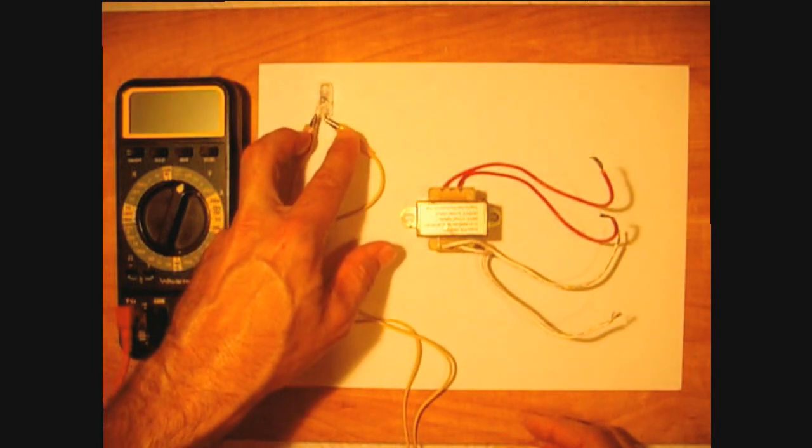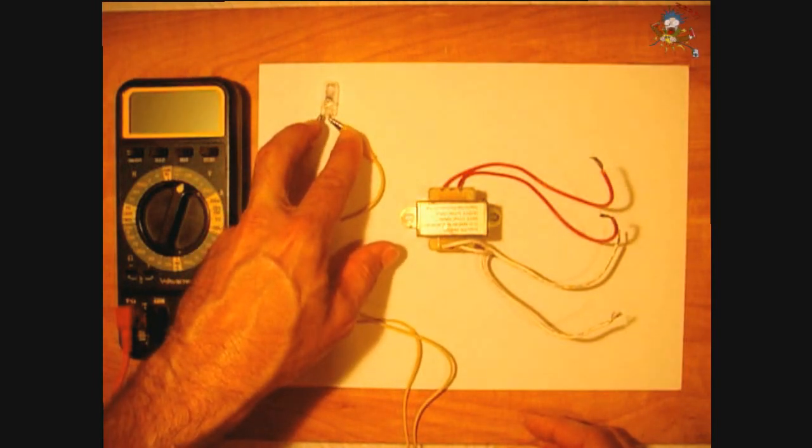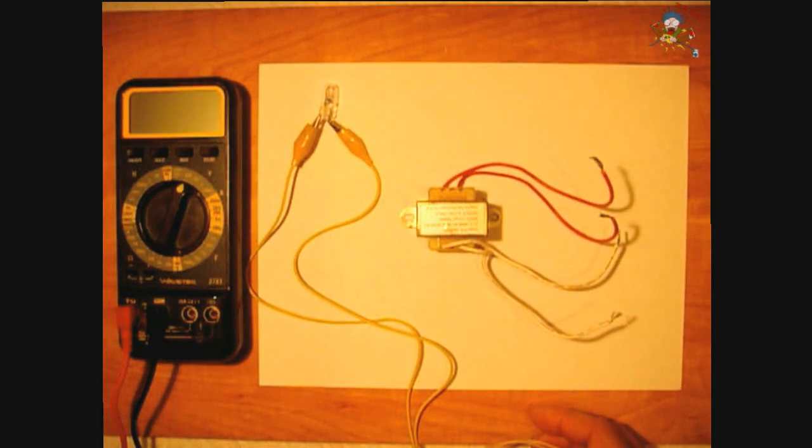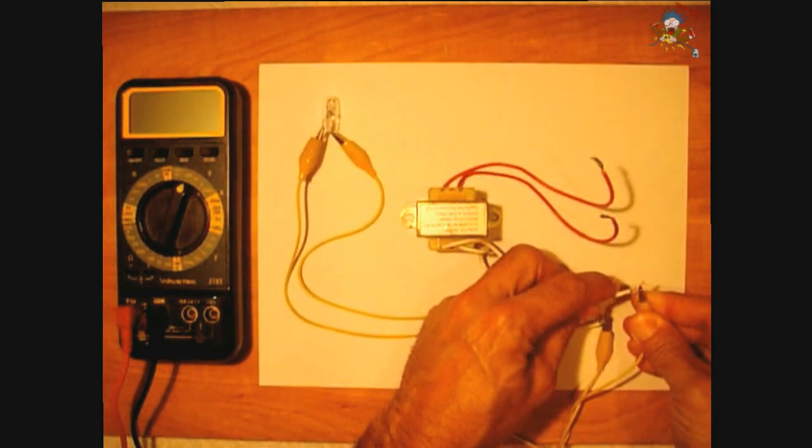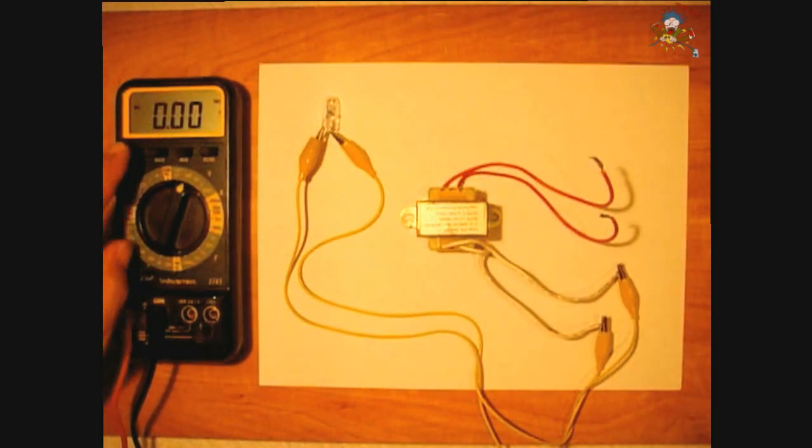Now this is the load that I would be using. This is around a quarter of an amp, this bulb. Let me connect it up to the secondary and turn on my DMM.